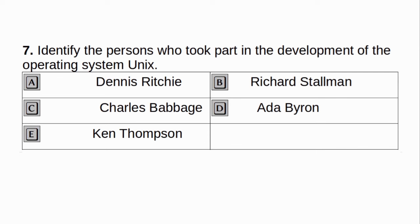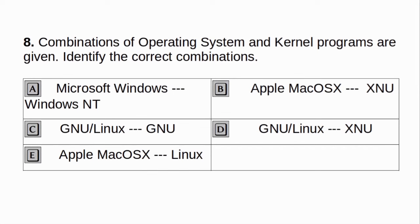Identify the persons who took part in the development of the operating system Unix. a. Dennis Ritchie. b. Richard Stallman. c. Charles Babbage. d. Ada Byron. e. Ken Thompson. Answer: a and e.